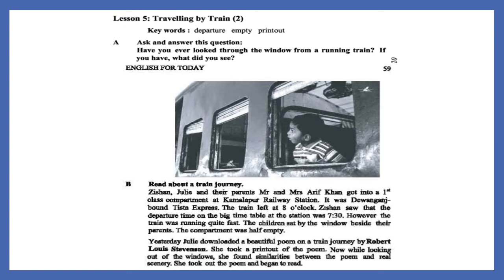There is a passage in this lesson, so let's read it first. Jishan, Julie, and their parents Mr. and Mrs. Arif Khan got into a first-class compartment at Kamalapur railway station. It was the Angonch-bound Tista Express. The train left at 8 o'clock. Jishan saw that the departure time on the big timetable at the station was 7:30.